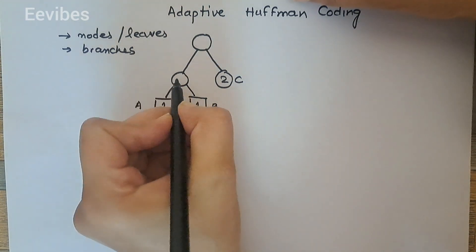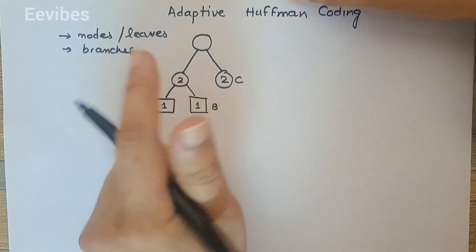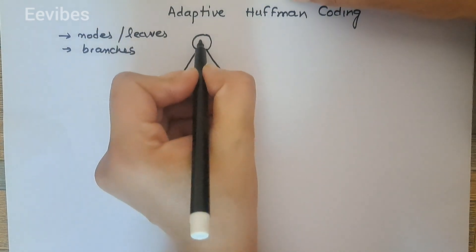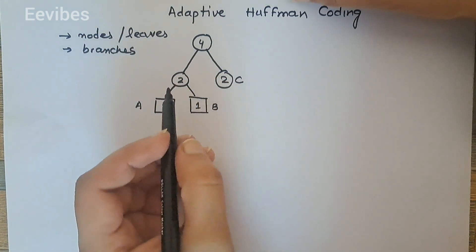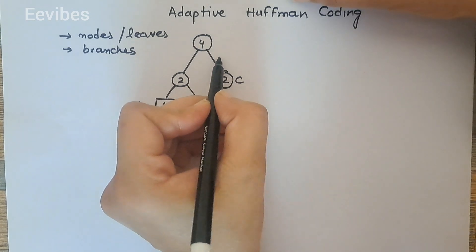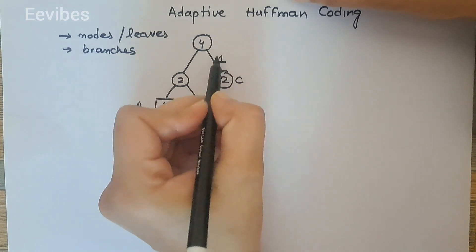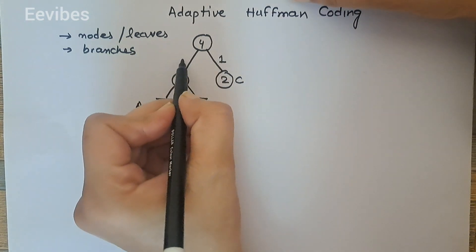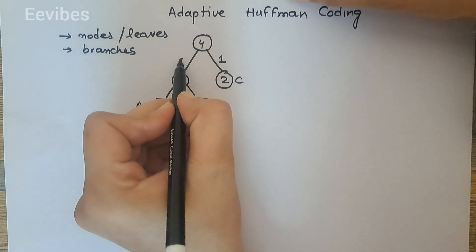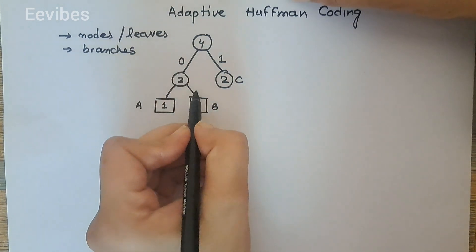The weight of internal nodes is equal to the summation of its offspring's weights — so one plus one is two, and two plus two is four. We assign the left-hand side branch a code of one, while the right-hand side branch is assigned a code of zero. In this way we perform the Huffman coding scheme.